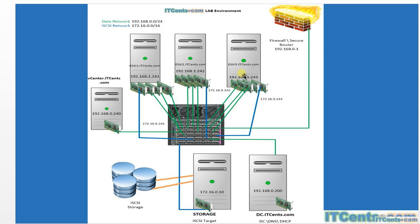If you want to follow along with hardware constraints, you can reduce the specs. For ESXi servers, you can go with as little as 4 GB each, but vCenter requires at least 8 GB of RAM. For storage, I'm using a single path. If you want to test multipath, you can add another NIC and use multiple VLANs or different IP ranges to show multiple paths from ESXi to storage. In this lab, I kept it simple since we just need shared storage.